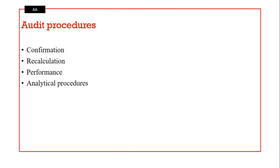You can make confirmation of account balances with suppliers and customers. You can also use the solicitor of your clients to get confirmation relating to legal matters. You can recalculate — for instance, recasting the asset register to find out if the total on the register equals what has been recorded. You can perform tasks such as bank reconciliation to check whether it was done appropriately.